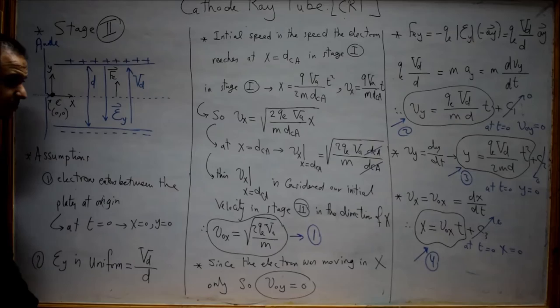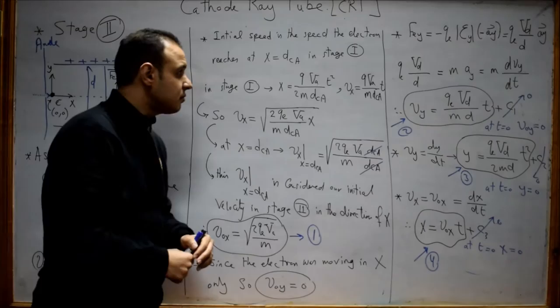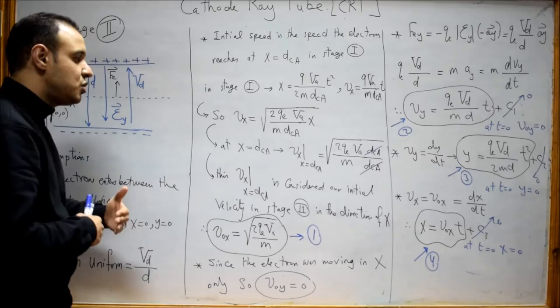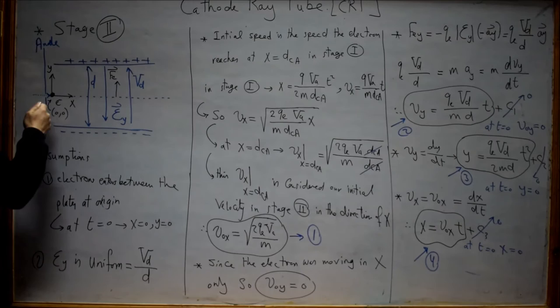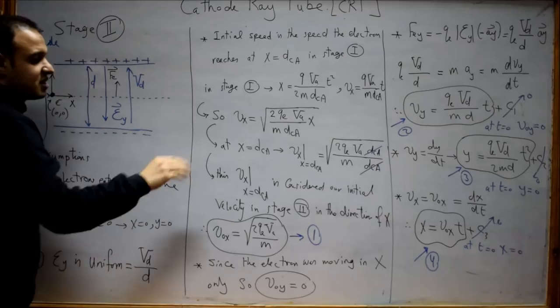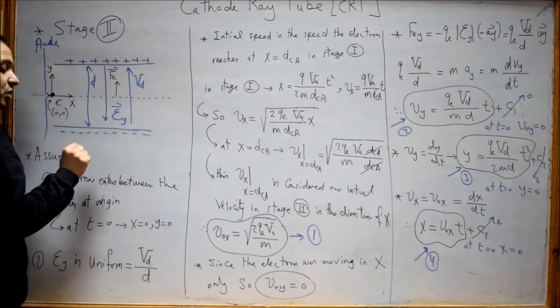The electric field is equal to the deflection voltage Vd over the distance d between the two plates. In stage 1, we assumed the electron starts at rest, but here that is not the case. The electron was initially accelerated between the cathode and the anode, so when it reaches the anode it already has some initial velocity in the X direction, but no motion in the Y direction. So V0Y is equal to zero at this point.